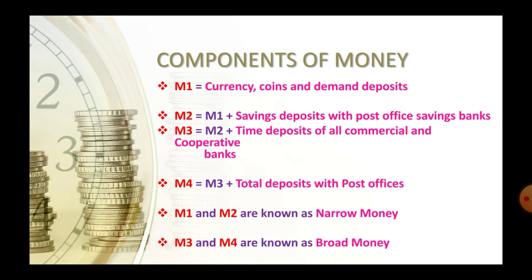These are also called money aggregates or money stock measures. M1 is equal to currencies, coins, and demand deposits. M1 means the currency with the public, demand deposits in the bank such as current accounts and saving accounts, and other deposits with RBI.